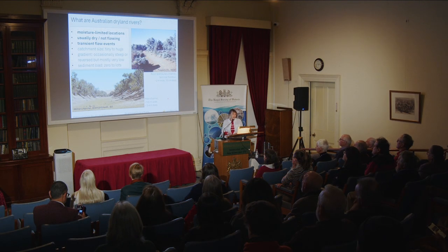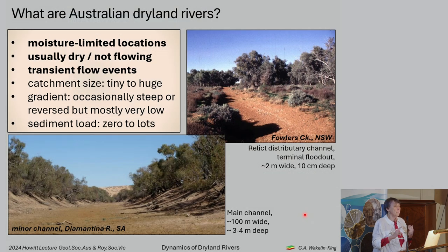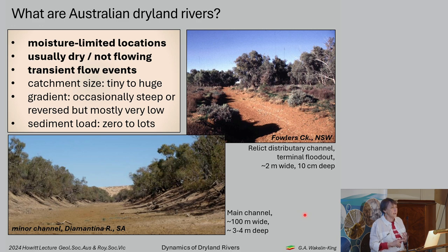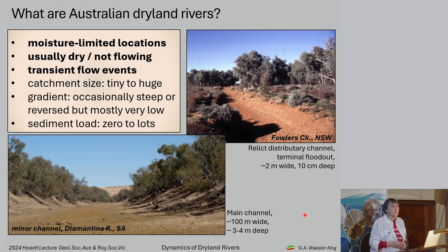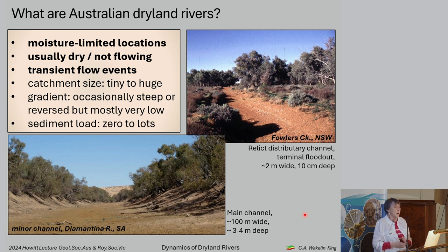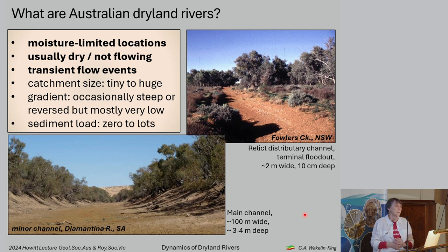The rivers of the Australian Drylands are rivers in moisture-limited locations. They are usually dry or not flowing, and when they do have a flow event, they're transient. The channel typically goes from dry to a big peak or several big flood peaks and then dies away to nothing. Catchments can be anything from tiny to huge, gradient is usually very low but sometimes steep, and sediment load can range from zero to absolutely lots.